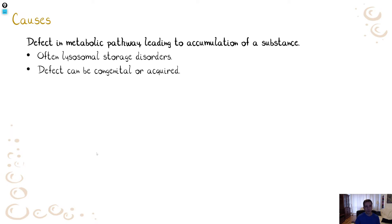Sometimes there can be a defect in a metabolic pathway leading to accumulation of a substance. In this situation, the cell is truly damaged — there is some defect in the metabolic pathway, in some enzyme for example. As a consequence, the cell cannot process the specific substance and starts to store it. The defect can be congenital — an inborn error of metabolism — or it can be acquired, caused by intoxication or hypoxia.